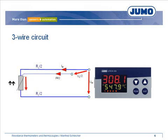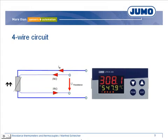A precondition for an accurate result is that both wires have the same resistance value. Using a four-wire circuit, the voltage drop is measured directly on the resistance thermometer. The resistance value can be calculated using the voltage drop on the resistance thermometer and the measuring current. The resistance values of the leads and contact points can differ, and the four-wire circuit has the lowest measuring inaccuracy.